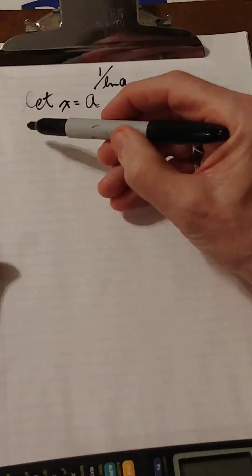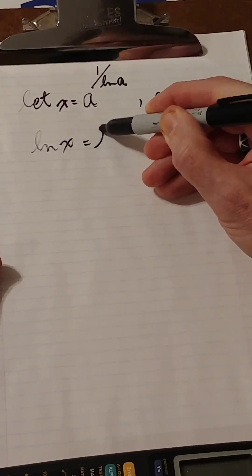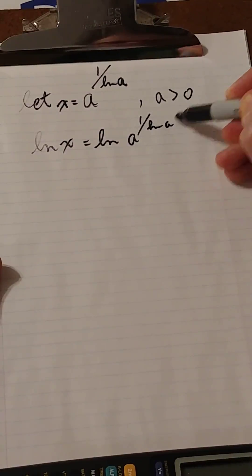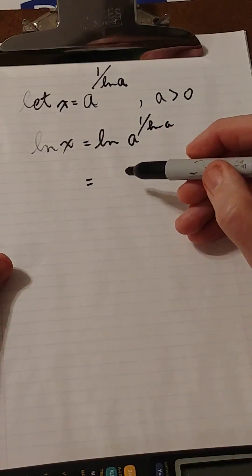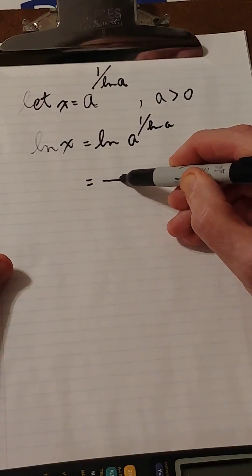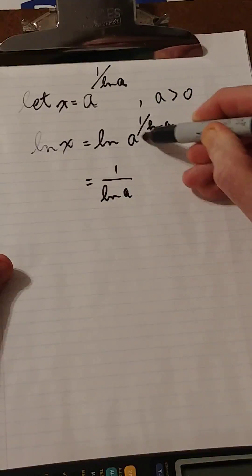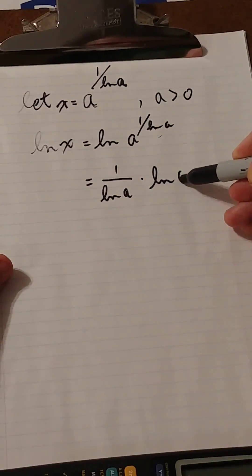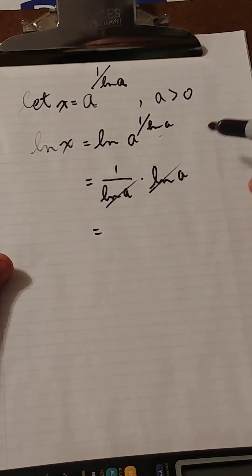And if we take the natural log of both sides, we get the natural log of x equals the natural log of a to 1 over the natural log of a. We can simplify the right-hand side by using the law for the log of a power, in which case the exponent comes to the front, 1 over ln a, and it's multiplied by the ln of the base, which is ln of a. And what do you know? They cancel, so you get 1.